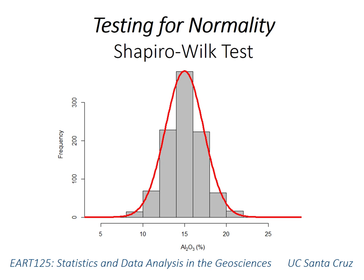Previous videos in this series have discussed parametric statistical tests, like the t-test or ANOVA, which require that the data be normally distributed. So you can use graphical methods, like a histogram, as you've done before, to assess that assumption.